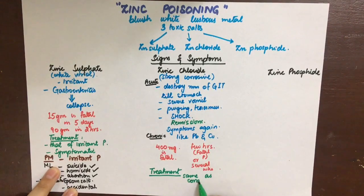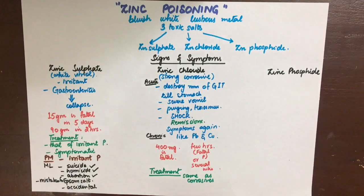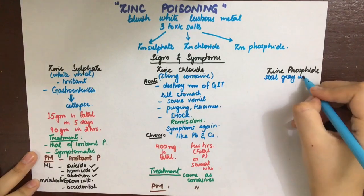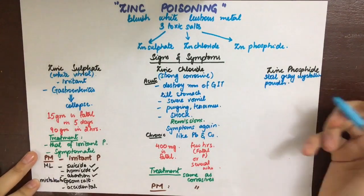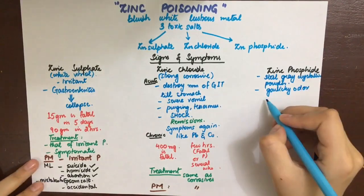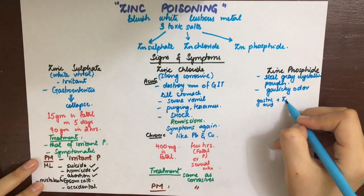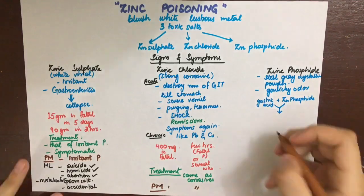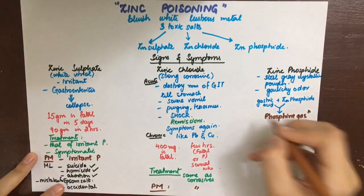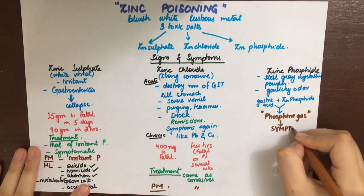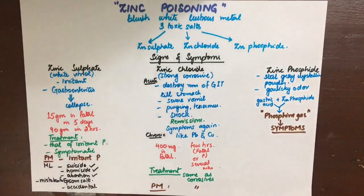The last zinc salt is zinc phosphide. It has a steel-gray crystalline powder-like appearance with a garlicky odor. On reaction with gastric acid, it liberates phosphine gas, causing symptoms of dyspnea, pulmonary edema, bradycardia, circulatory collapse, neurological symptoms, coma, and death. Shock, oliguria, acidosis, tetany, and convulsions can also occur.